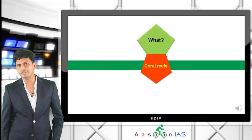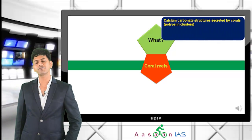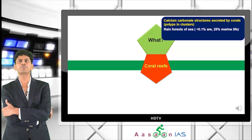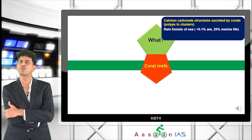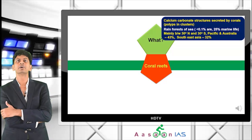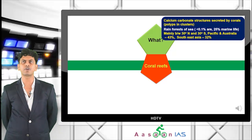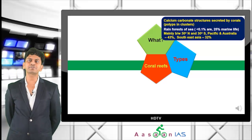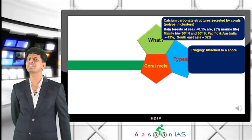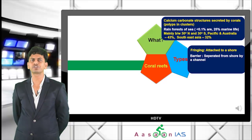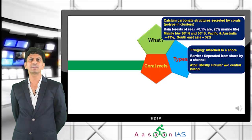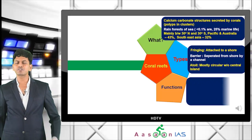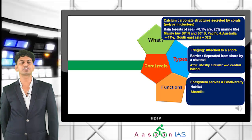Summary: Coral reefs are calcium carbonate structures secreted by corals — polyps in clusters. They are called rainforests of the sea as they occupy less than 0.1% of ocean area but are home to more than 25% of marine life. They are mainly found between 30 degrees north and 30 degrees south. Types: fringing reef (attached to shore or small channel), barrier reef (separated by wide channel), and atolls (no mainland, mostly circular).